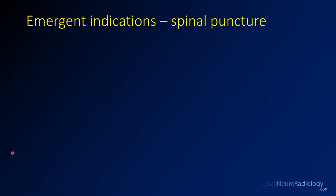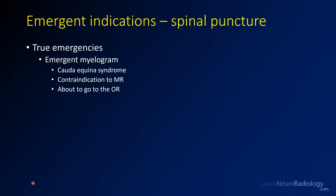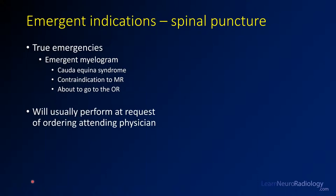You have to keep in mind which indications are emergencies, because those are the ones you might have to perform after hours or overnight. The true emergencies in my mind are an emergent myelogram in a patient who's about to go to the OR — for example, cauda equina syndrome where you can't get an MRI due to metal implants or an MR-incompatible pacemaker. In those cases I would do it only if the patient's about to go to the OR. If a resident or medical student is calling to request it, I usually ask to speak to the attending before calling someone in overnight.